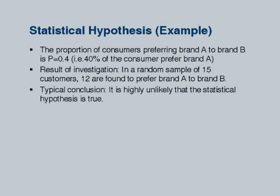Suppose I say 10 people preferred brand A — that is also unlikely but more likely than 12. What about 8 out of 15? Definitely possible. 7 out of 15 — very possible. At some point we have to draw the line saying this looks okay, 0.4 seems plausible. If exactly 40 percent of those sampled preferred brand A you would say it looks possible. If 0 out of 15 preferred brand A you would be suspicious of the 0.4 claim; if 15 out of 15, also suspicious. Somewhere in the middle you would be okay — what is that middle region?